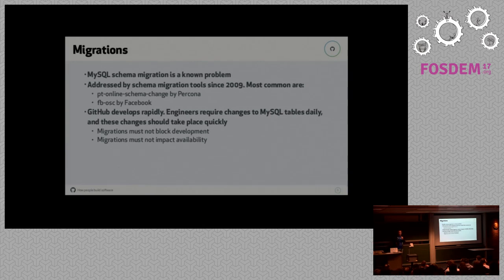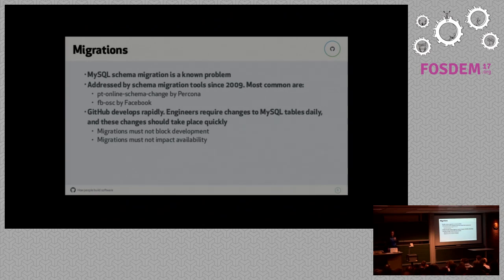Of course, these slides were originally made by Slomi, so there might be some GitHub-related stuff about internal operations at GitHub. I will skip over most of it, and I might add some information about how we do schema migrations at Booking and how we are using Ghost at Booking.